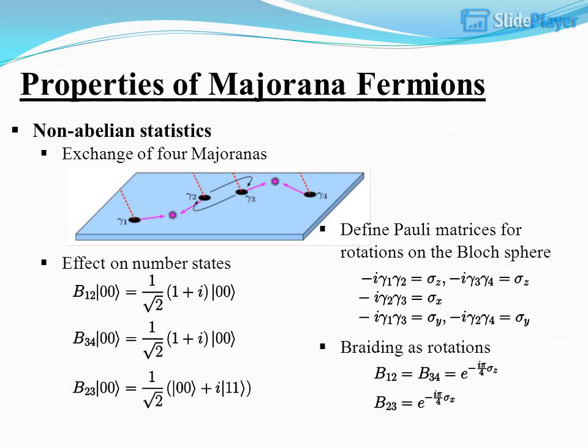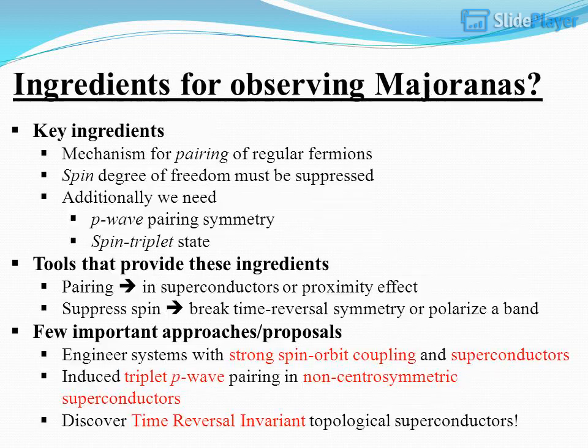Non-Abelian statistics: exchange of four Majorana fermions and its effect on number states. Pauli matrices are defined for rotations on the Bloch sphere, and braiding is interpreted as rotations. Key ingredients for observing Majoranas are then outlined.